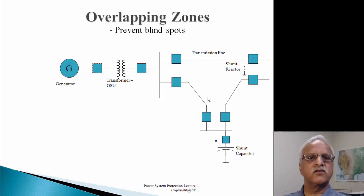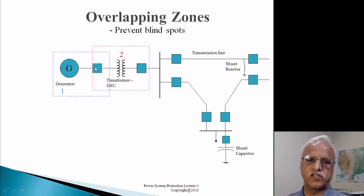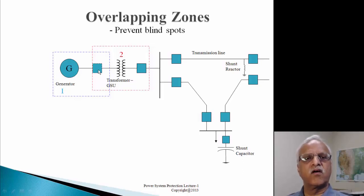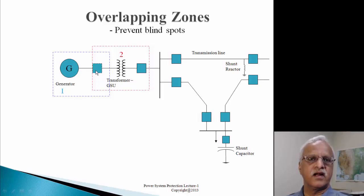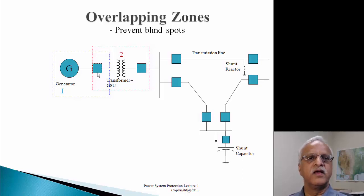A second key aspect of zones of protection is that you need overlapping zones. You don't want a transformer zone that covers only the transformer without including the devices outside it. Similarly, for a generator, you don't want a CT only on one side, because if a fault occurs inside the breaker, you may not be able to identify it as part of the generator protection. So the generator protection and transformer protection are overlapping. If a fault is common to both zones, both protection schemes operate and take corrective actions.